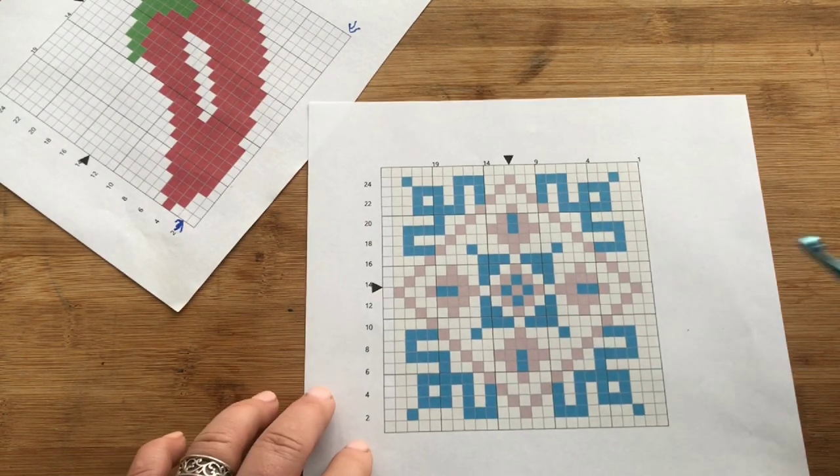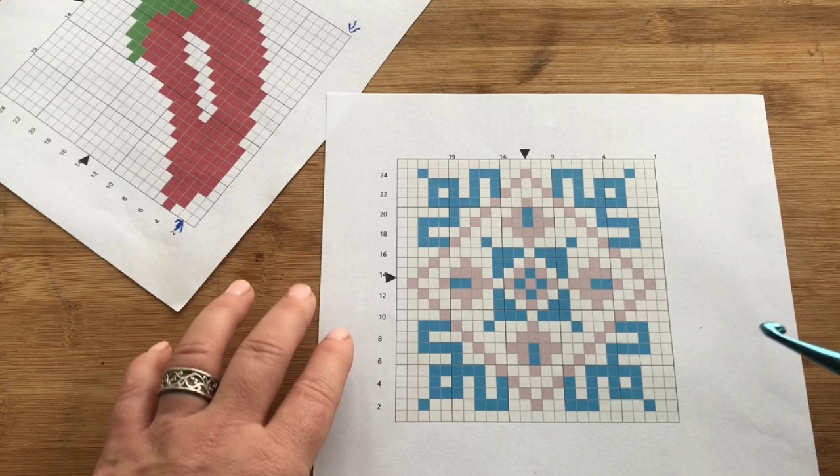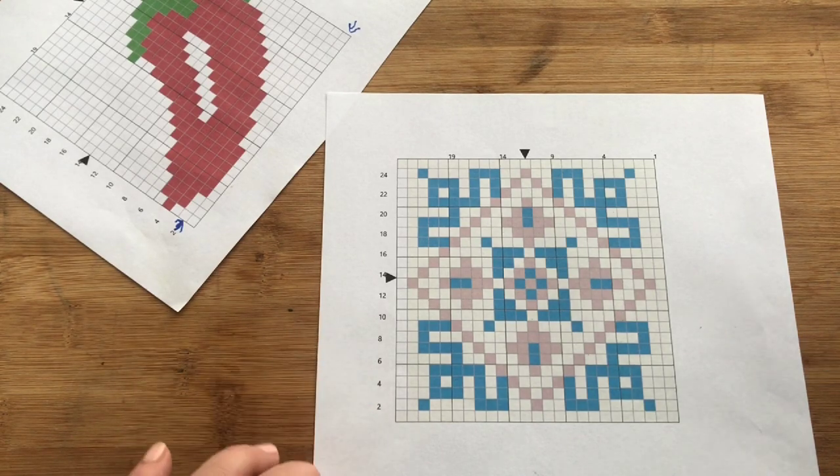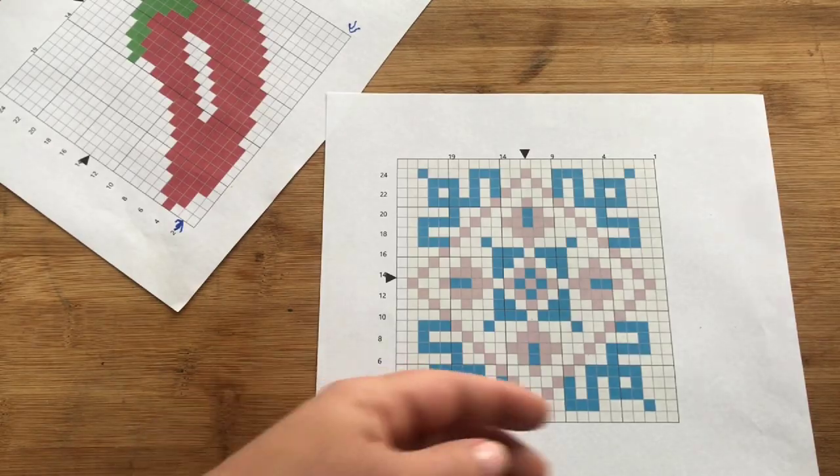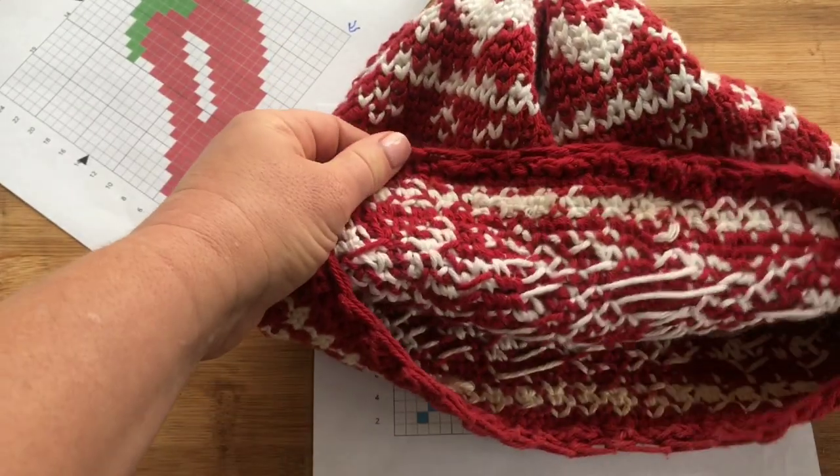Let's talk about the stitches that you can use to create a graph. You can use a single crochet stitch. Usually the single crochet stitches are worked row by row, and you can use different methods for color changing like intarsia or you can use the floating.